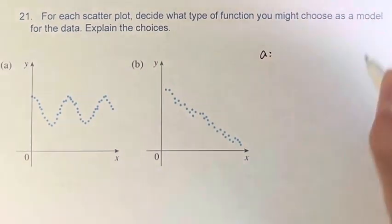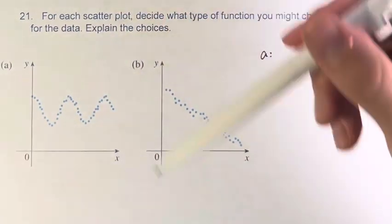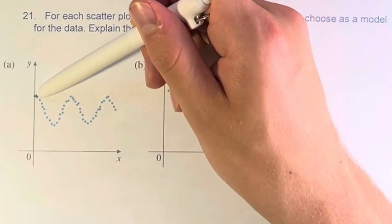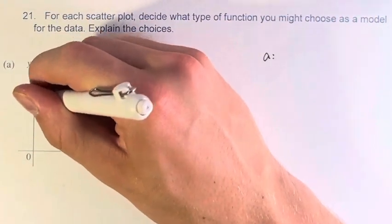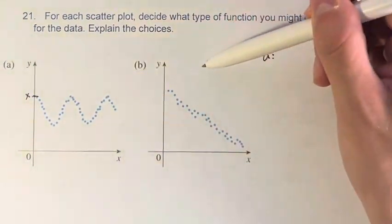So for A, we can notice that this is a cyclical periodic function. We have a starting value, let's call this x, and we hit this value multiple times.